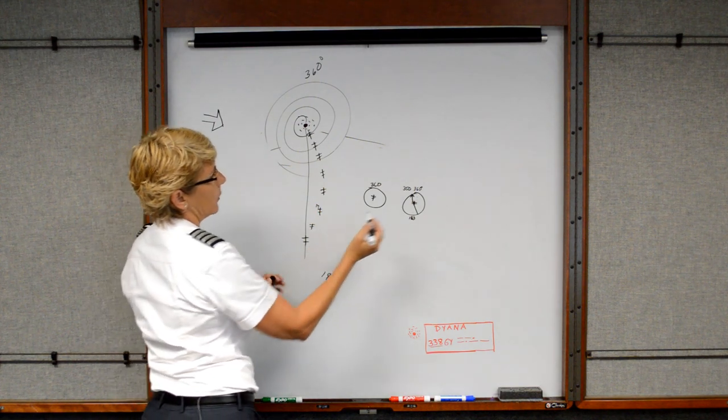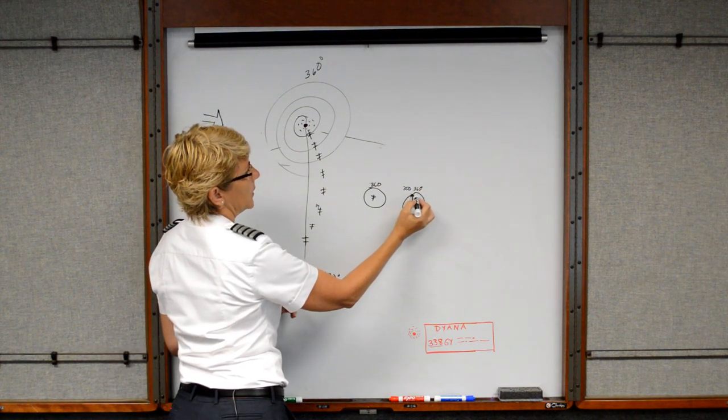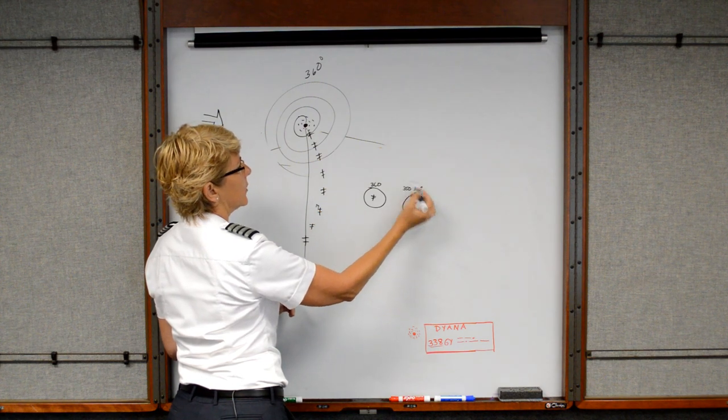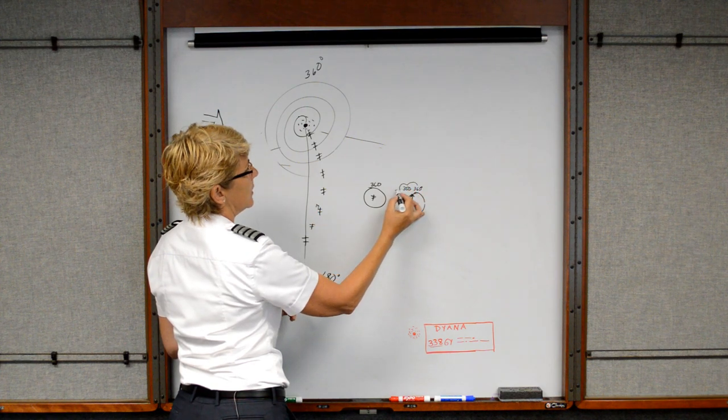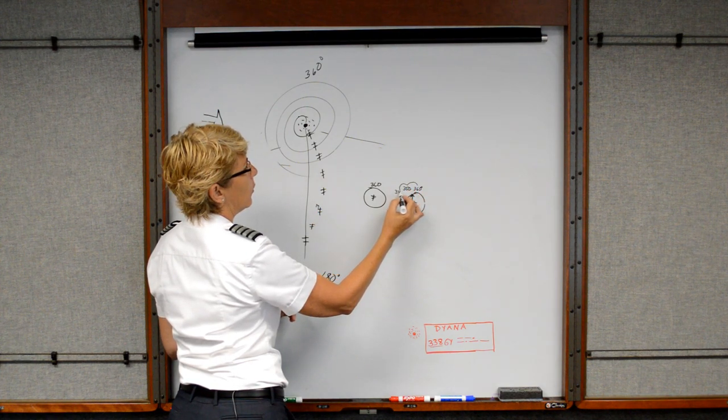So how to correct for this is we take, we double the error in the direction of the needle. So that's 10 degrees, so 20 degrees. I would want to fly a 340.